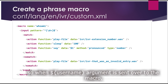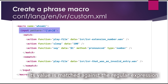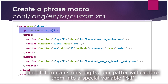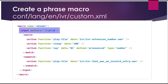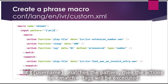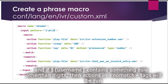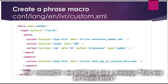When that argument is sent over to the macro, the input value is matched against the regular expression in the pattern. If it contains only digits, our pattern will capture those into the $1 special variable — so $1 will contain our username or caller ID. After the regular expression, we have a bit of logic to help us decide what to do: if the input matches the pattern, the action inside the match node will be executed; if the pattern contains something other than digits, the action inside the no-match node will be executed, and we simply play a message that it was an invalid entry.